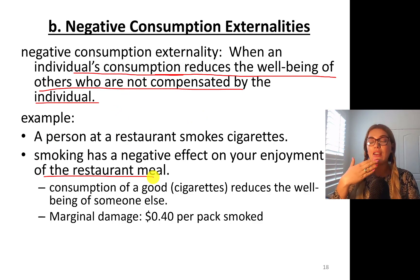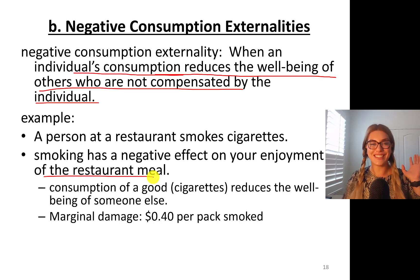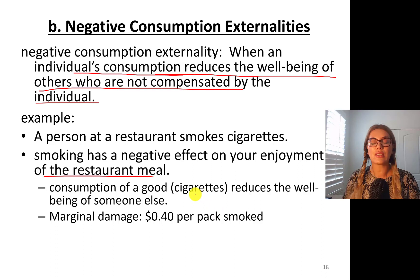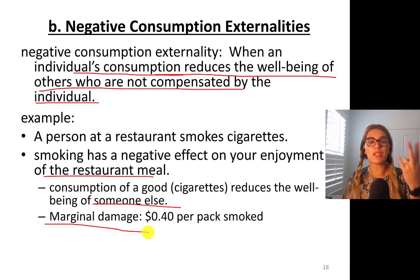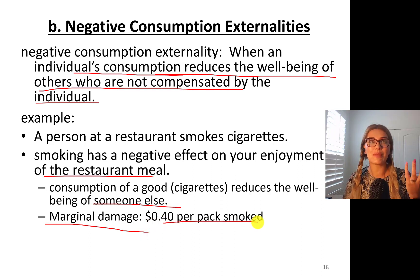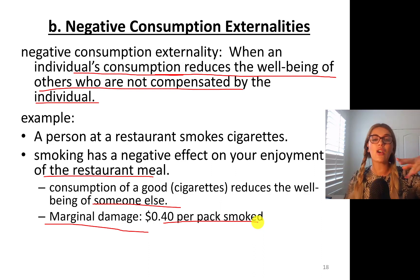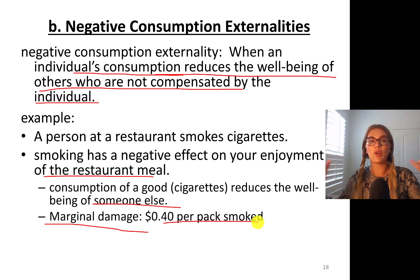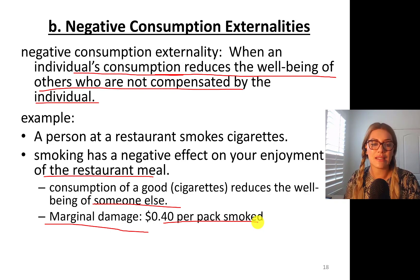You're eating your food and suddenly there's smoke. What if you actually have asthma? That's really going to ruin your dinner. So consumption of a good — cigarettes, for instance — reduces the well-being of somebody else. Let's say the marginal damage from somebody smoking is 40 cents per pack of cigarette smoked. This makes more sense in a patio area because it's open air, but with many people smoking, your enjoyment went down by 40 cents.